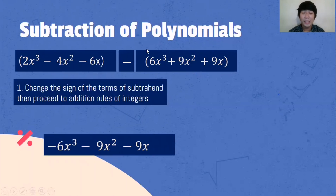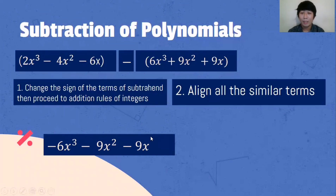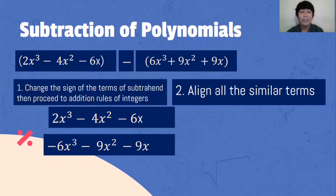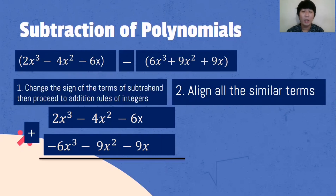From positive 6x cubed, it will become negative 6x cubed. From 9x squared, it will become negative 9x squared. From positive 9x, it will become negative 9x. Then we align all the similar terms — x cubed with x cubed, x squared with x squared, x with x — aligning variables with the same exponent. Then we proceed to addition.